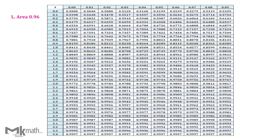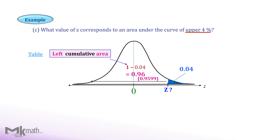We need to locate the left cumulative area of 0.96 or close to 0.96 from the inside of the table. We found two values close to 0.96. Comparing the differences, we use 0.9599. Go straight to the left to read the first two digits of the z-score and go straight up to read the second decimal. So the z-score should be 1.75. We use the closest area 0.9599 to 0.96, so the z-score that corresponds to the right area 0.04 is 1.75.